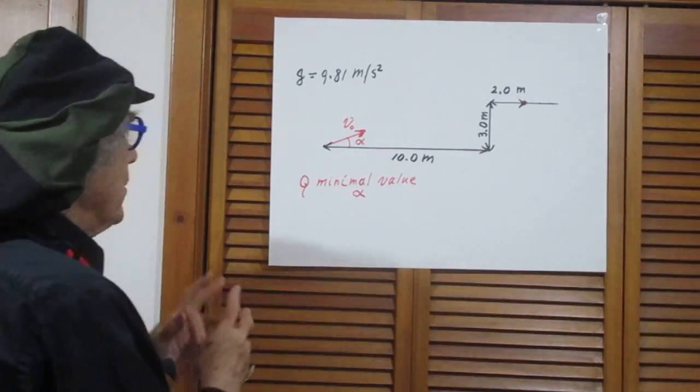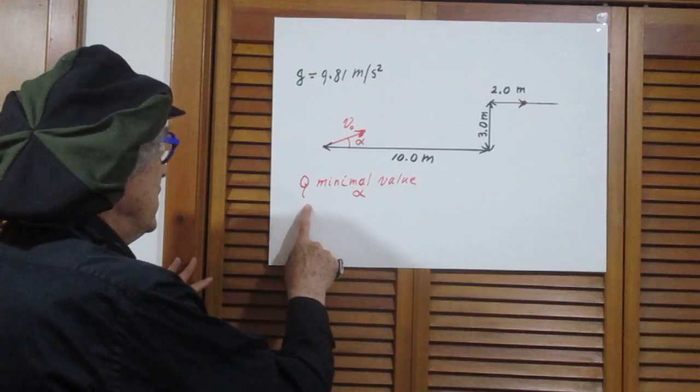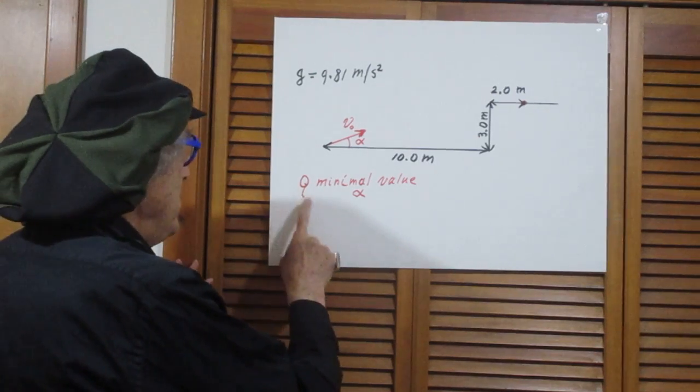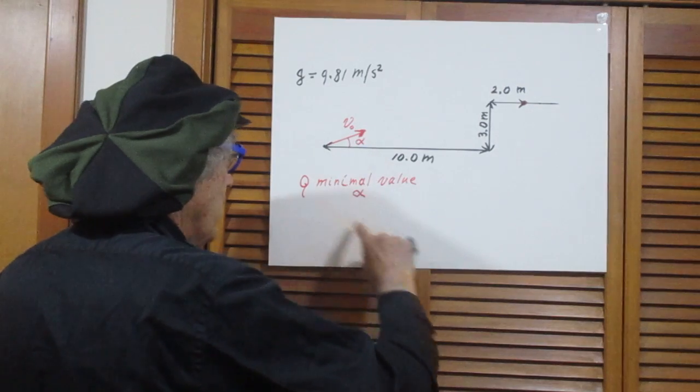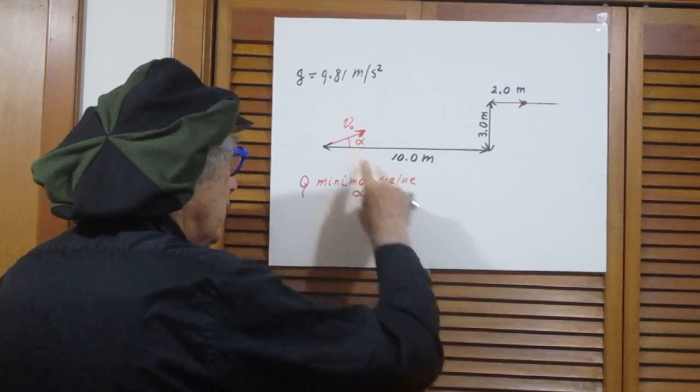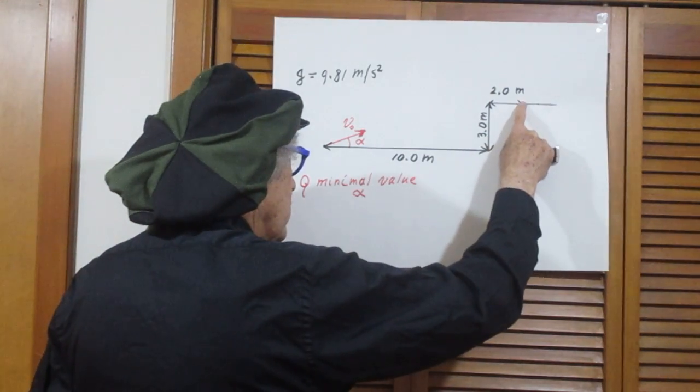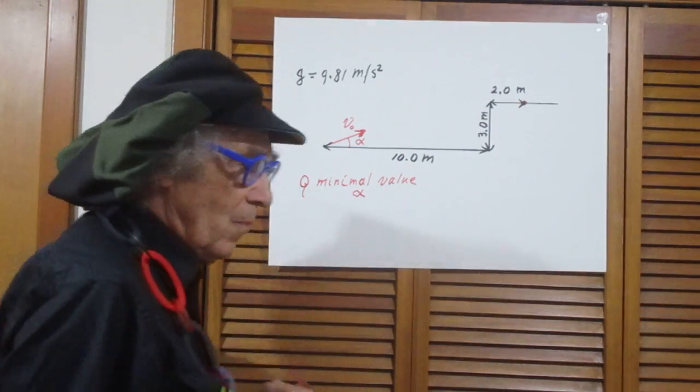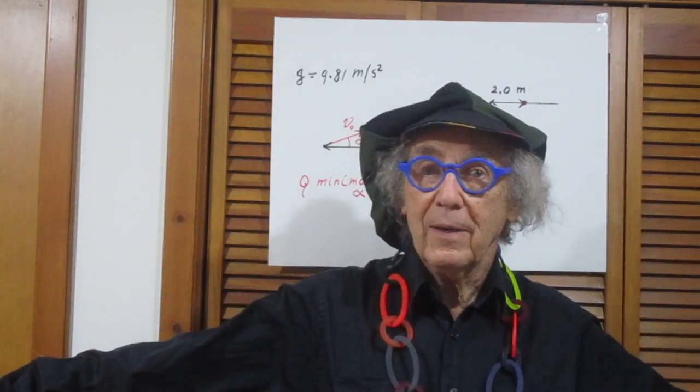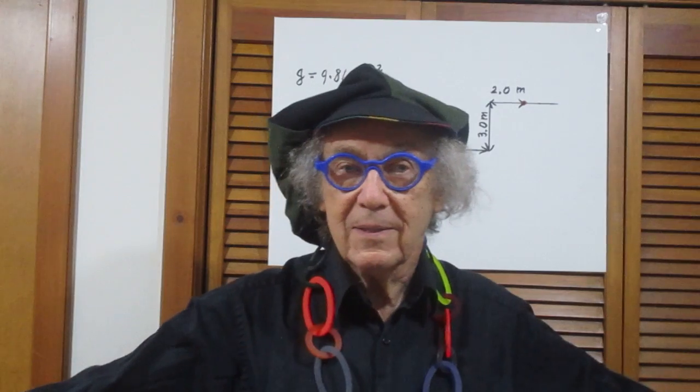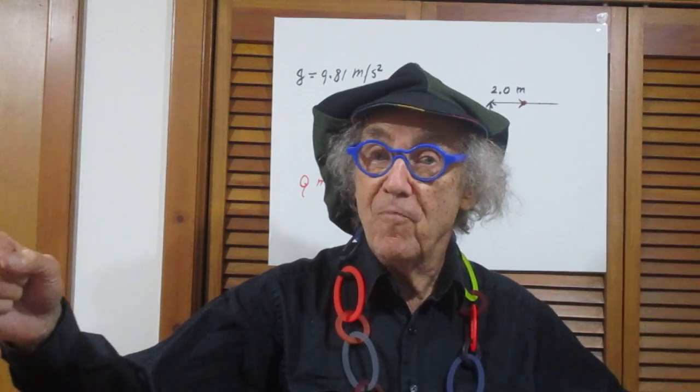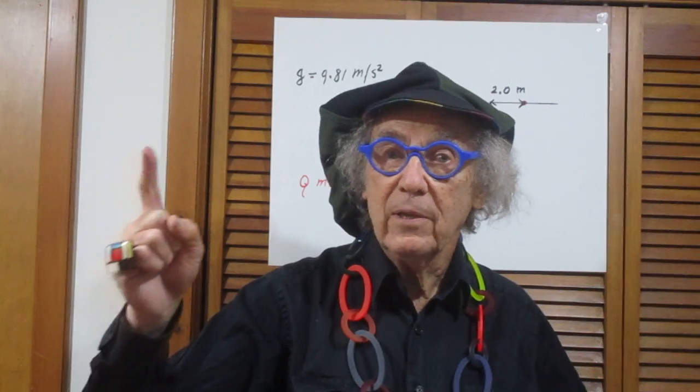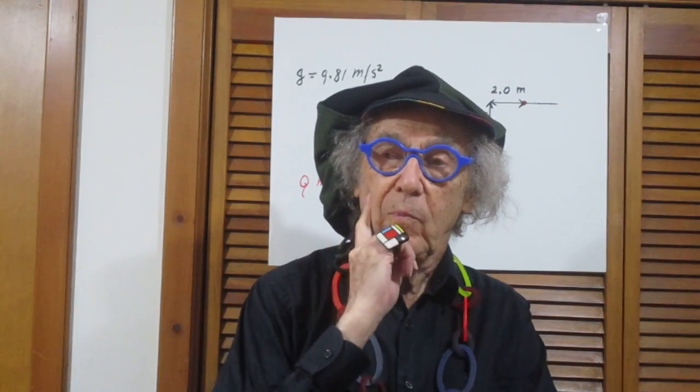And the question now is: what is the minimum angle alpha for the bullet to hit this point? All right, classic high school problem. The minimum value of alpha in degrees.